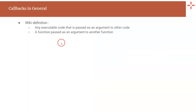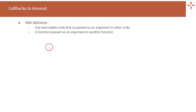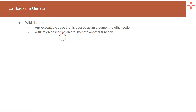In any programming language, a callback is an executable code that is passed as an argument to another code. In simple words, it is a function that is passed as an argument to another function.